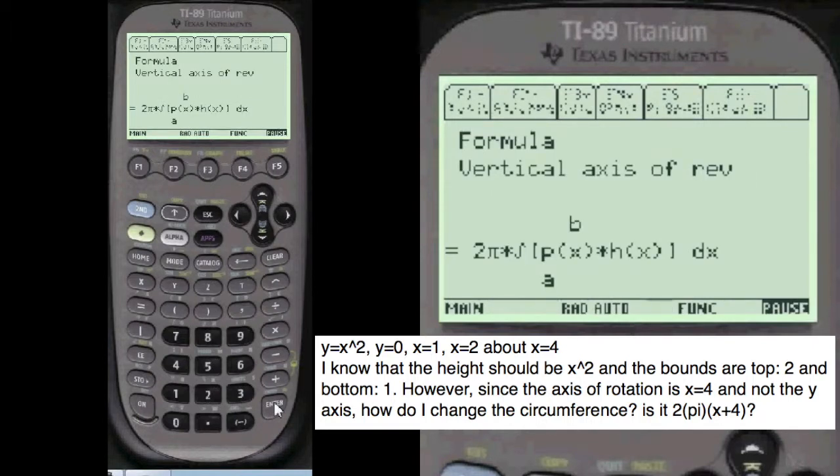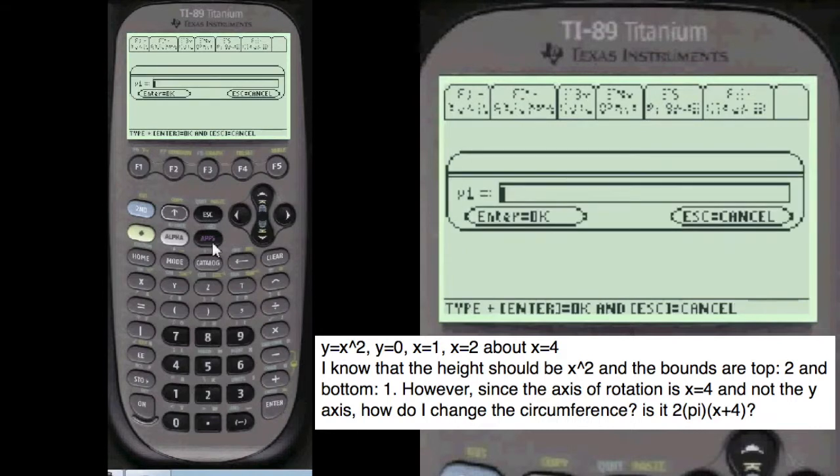There's the formula. And we have to press alpha before we enter anything on these entry lines here. Alpha x squared is the first function.